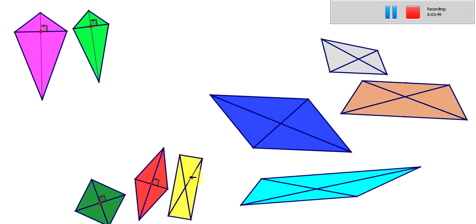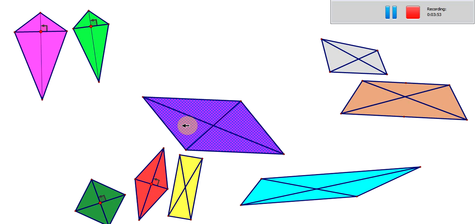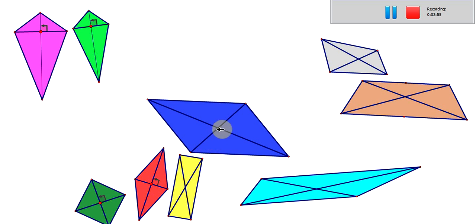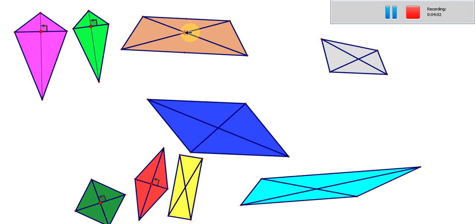This one here, they don't cross at right angles, but you can see that the diagonals have been chopped in half. The rectangle. Same for the parallelogram. That bit and that bit are the same length. And so are that bit and that bit. So the diagonals chop each other in half.